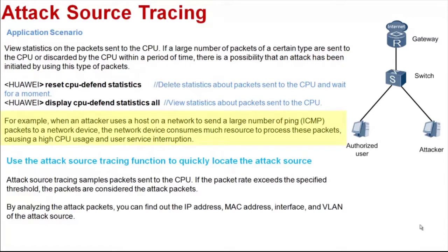For example, when an attacker uses an online host to send a large number of ping packets to a network device, the network device consumes much resource to process these packets, causing a high CPU usage and user service interruption. When an attack occurs, we can use the Attack Source Tracing function to quickly locate the attack source.